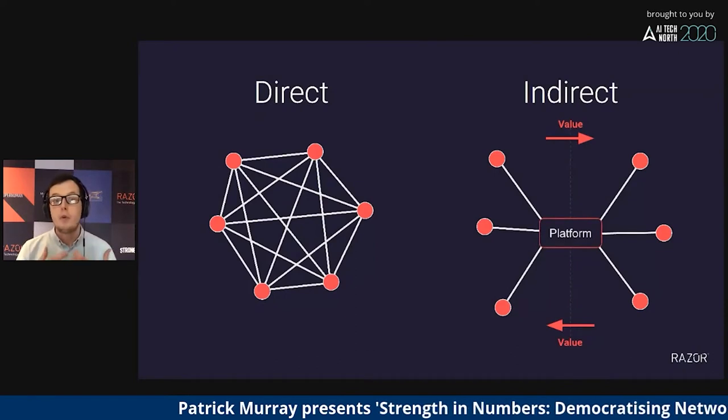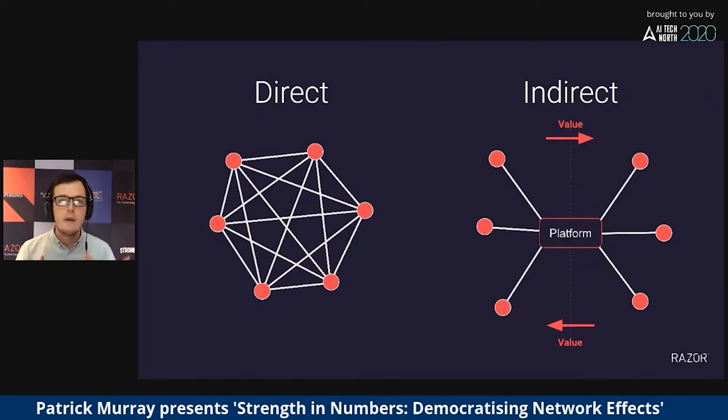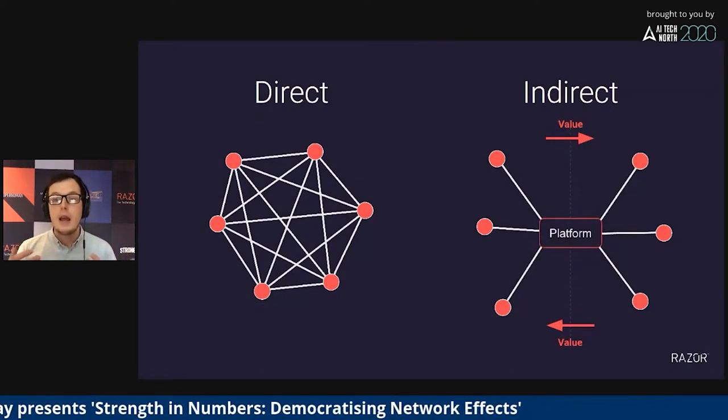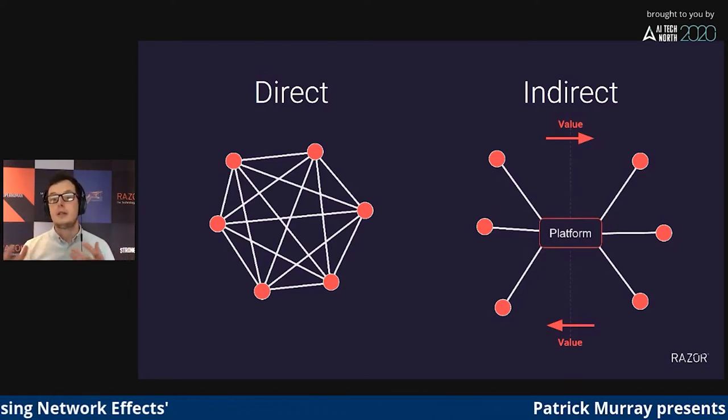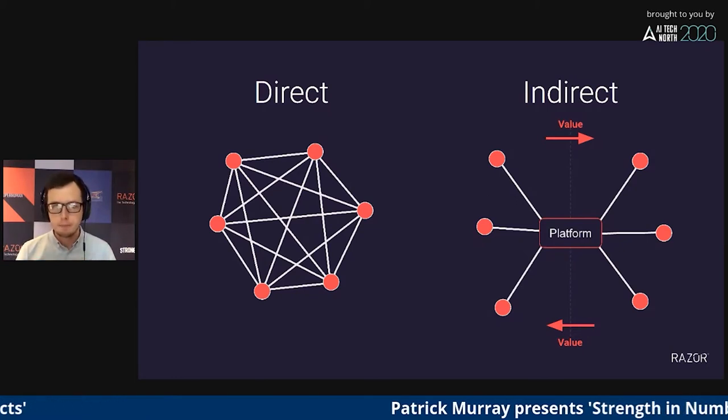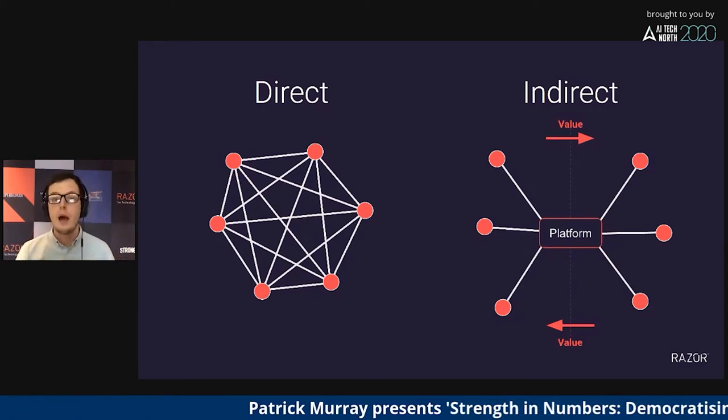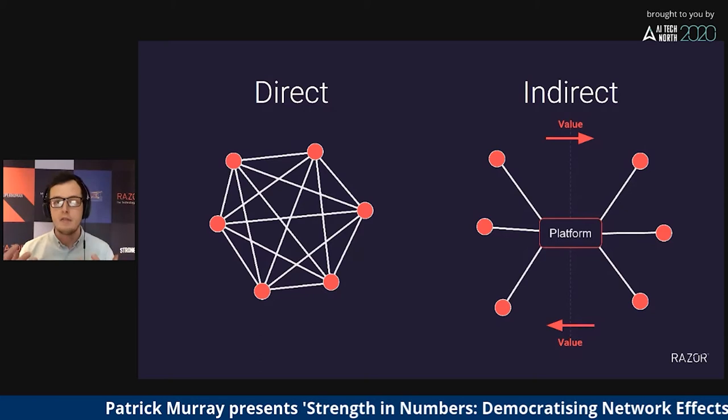Now, traditionally, there have been two broad flavors of network effects, direct and indirect. So direct network effects are driven by nodes, whether they're people, computers, or whatever, talking to and deriving value directly from each other. This is Facebook, where you talk to your friends and get that value from them.